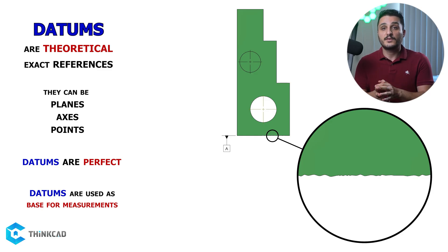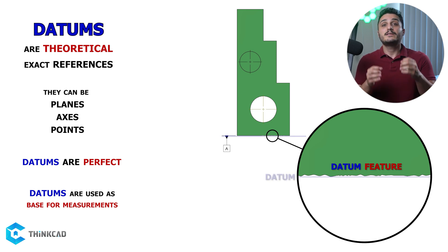This imperfect surface that is on your part is your datum feature. Now the datum itself is a perfectly flat theoretical plane that touches your datum feature. No matter how imperfect your datum feature is, there will at least be three points of contact between your datum feature and your datum.